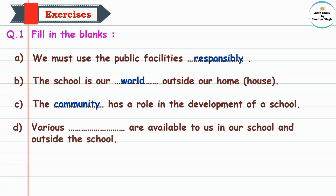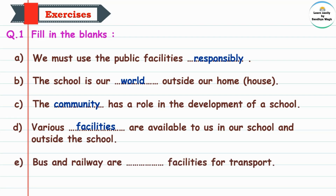Fill in the blank (d): Various — are available to us in our school and outside the school. Various means vividha — different types of facilities available inside and outside our school. Answer: Various facilities are available to us in our school and outside the school.